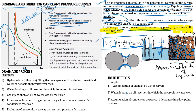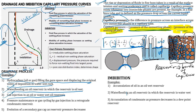In this water wet case, drainage shows water saturation reducing — non-wetting phase saturation increasing and wetting phase saturation decreasing. Examples of drainage: hydrocarbon or oil or gas filling pore space displacing original water in water wet rock; water flooding in oil wet reservoir; gas injection (gas is always non-wetting phase) in oil wet or water wet rock; pressure maintenance or gas cycling by gas injection in retrograde condensate reservoir; evolution of a secondary gas cap as reservoir pressure decreases.